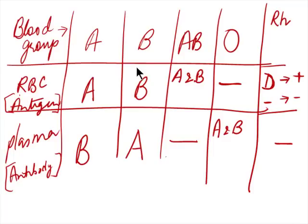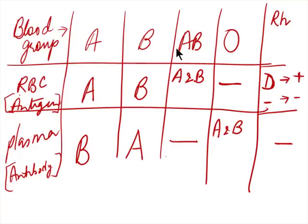Let's look at blood groups and some of the things that most often cause confusion. Looking at this chart, if somebody's blood group is A, then the antigen present on their RBCs is A, and that's what determines the group. If it's B, the antigen is B. If it's AB, they have both A and B antigens. If it's O group, they do not have any antigens.